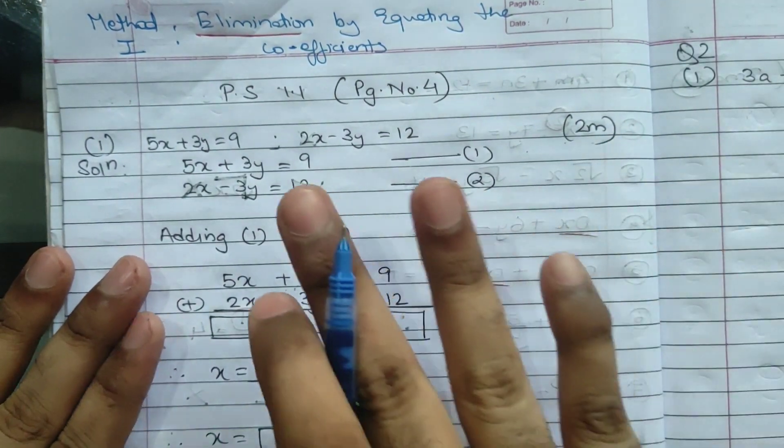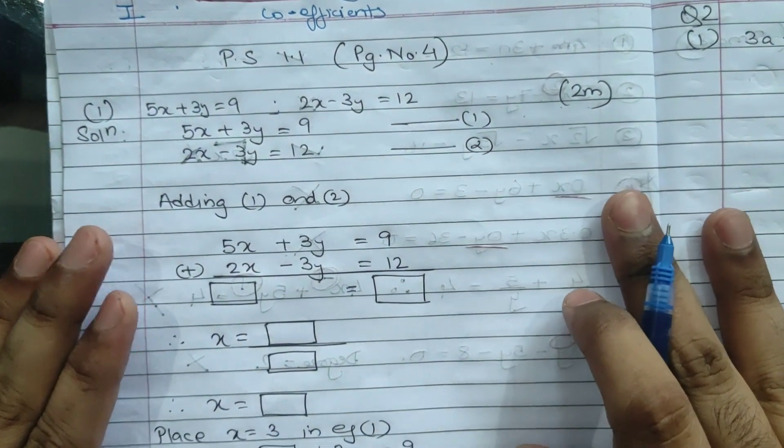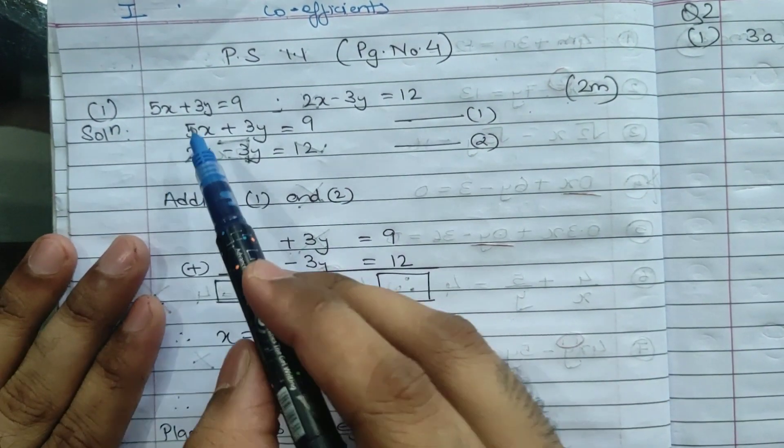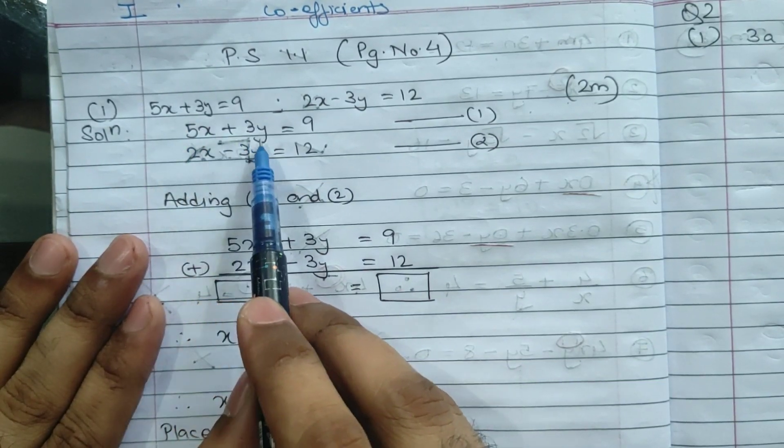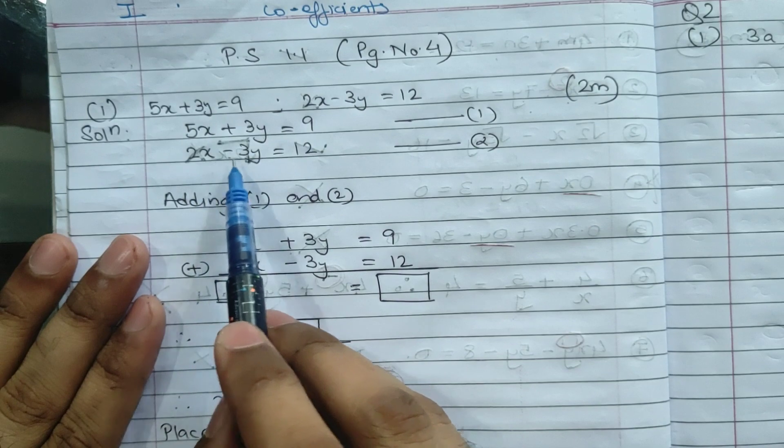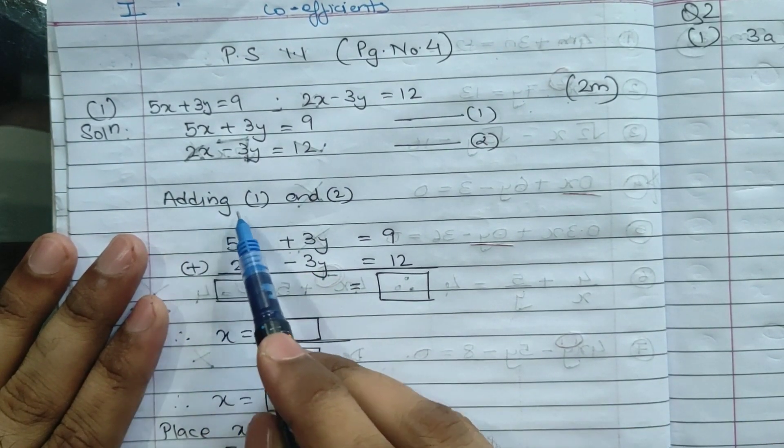The question is 5x plus 3y equals 9, and 2x minus 3y equals 12. This is an activity-based question. In this box you have to fill the box, that's it.